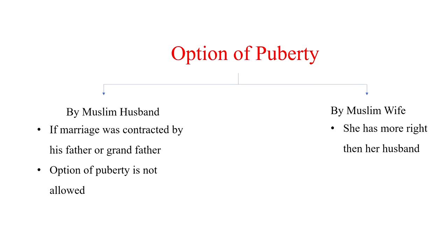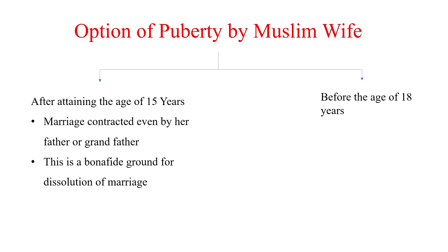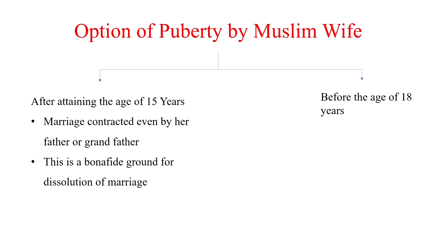Option of Puberty, or Khiaar ul Bulog, can be exercised by the Muslim husband or the Muslim wife. After thorough analysis, it is clear that the Muslim wife has more liberty in comparison to her husband with respect to this option.